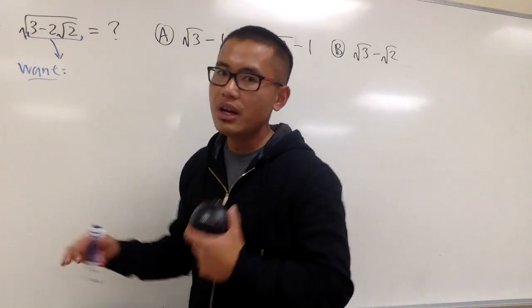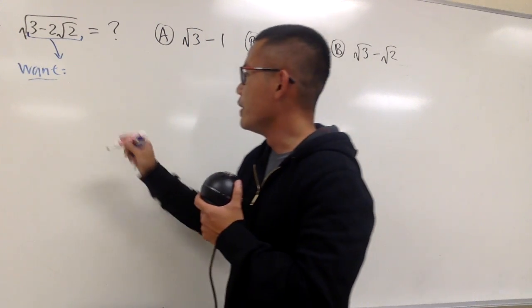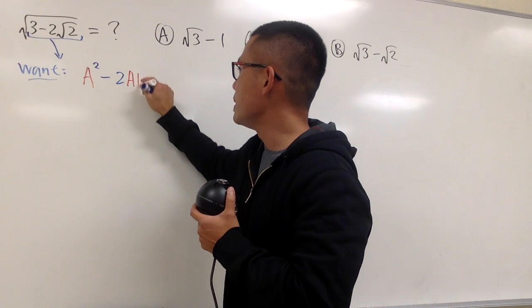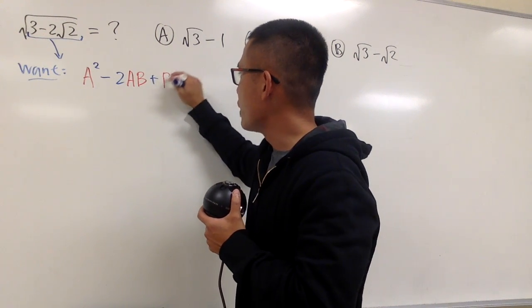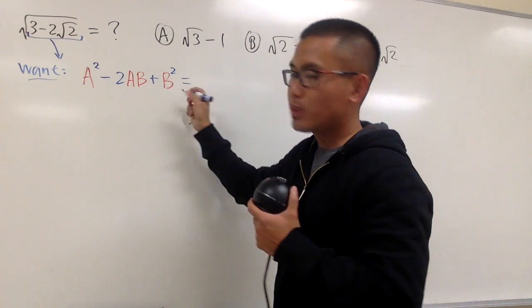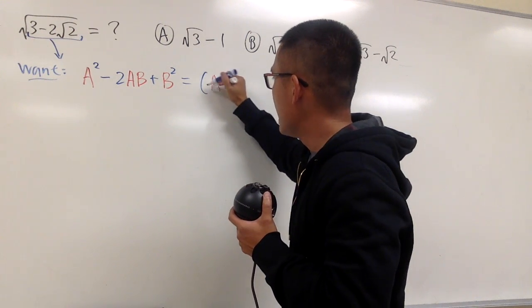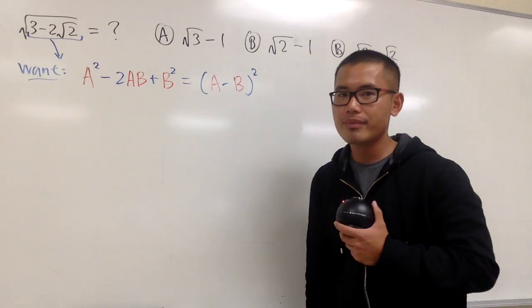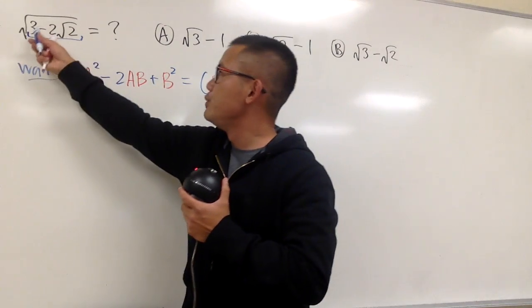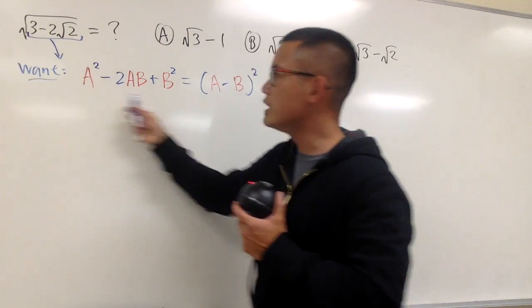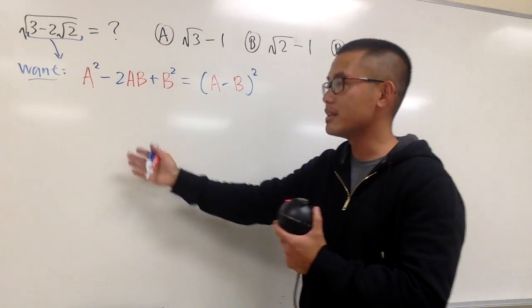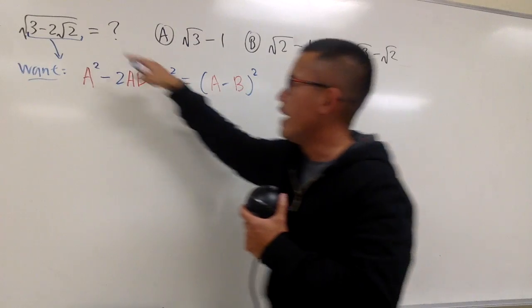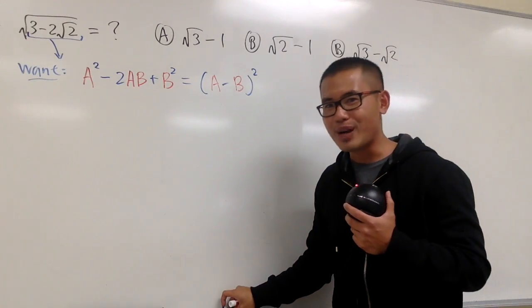And since we have a minus right here, let me write this down for you guys. We know when we have a² minus 2ab and then plus b², this right here is a perfect square, which is going to be (a minus b)². And with this being said, can I make 3 minus 2√2 into this form? Because if I could do that, then I can complete the square like this, and then I can cancel this square and that square root on the outside. And that would be so wonderful.